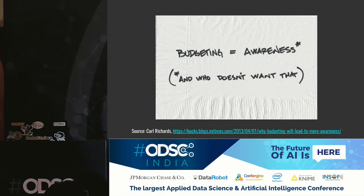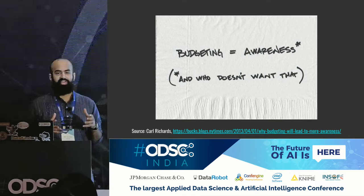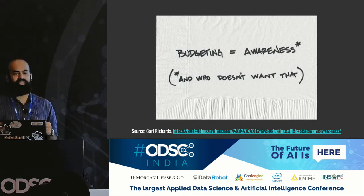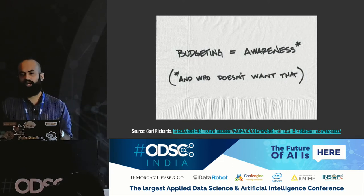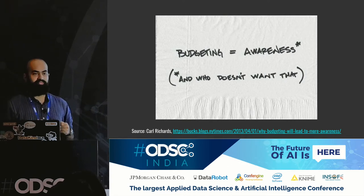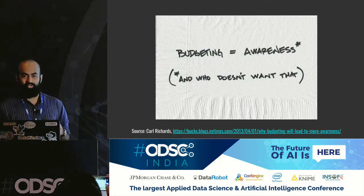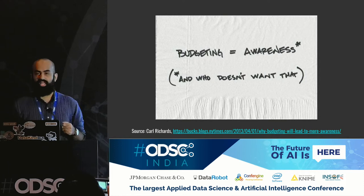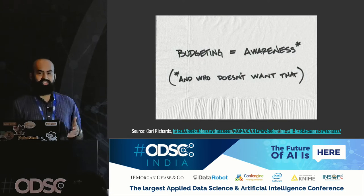There was this article in the New York Times by Carl Richards where he says budgeting equals awareness. We are in this era of data where we don't know how our tax money is being used for giving public services — how much of your tax component goes into the school in your neighborhood or for pothole repair in your ward. We don't have that kind of transparency in India, but there are other countries working to get that transparent information in place.